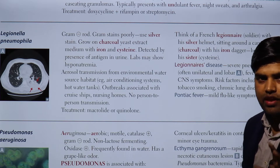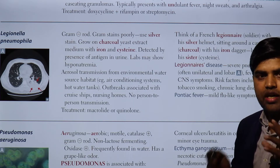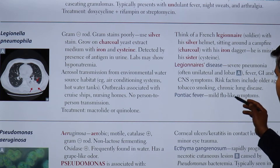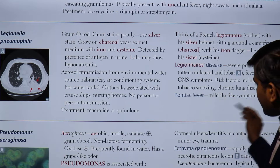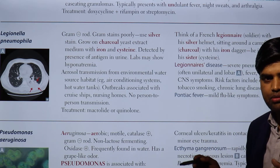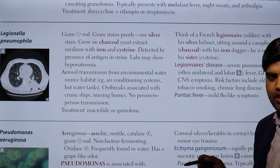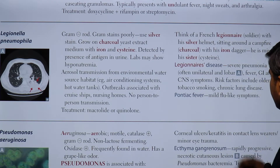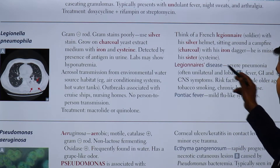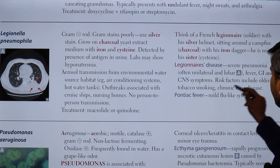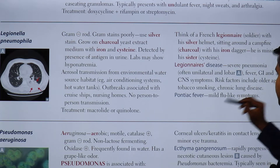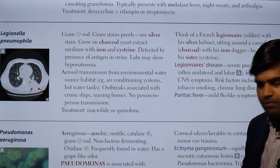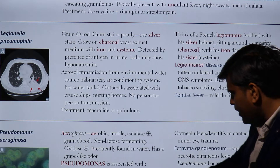Any patient developing diarrhea, hyponatremia, and CNS symptoms with pneumonic patches and fever — think Legionnaire's disease. There is also a mild flu-like illness called Pontiac fever. Risk factors for developing Legionnaire's disease include older age, tobacco smoking, and chronic lung disease.